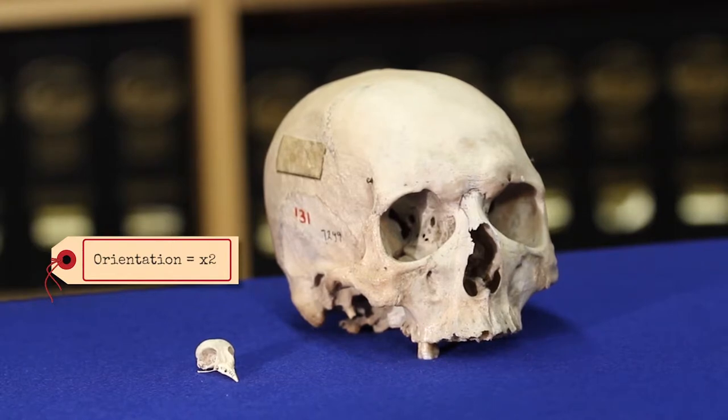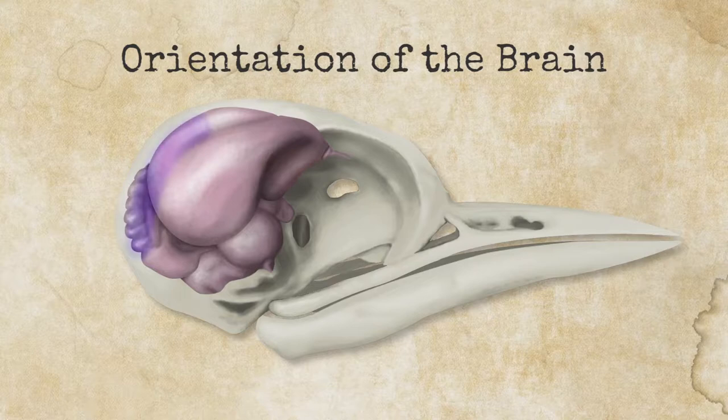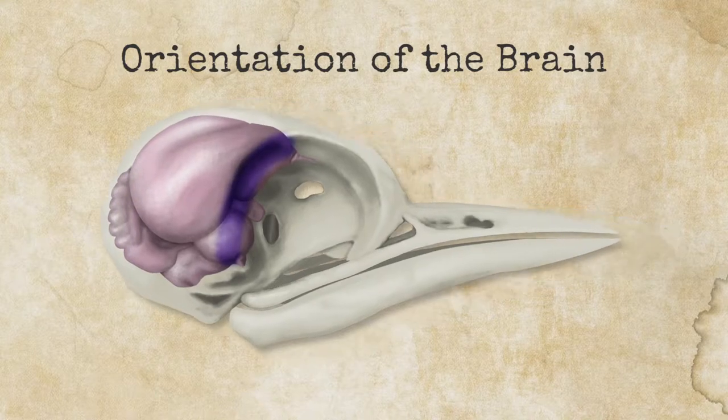The factor of two for the woodpecker brain is somewhat approximate. At the back of the brain, it's a reasonably good approximation. At the front, things are more complicated.